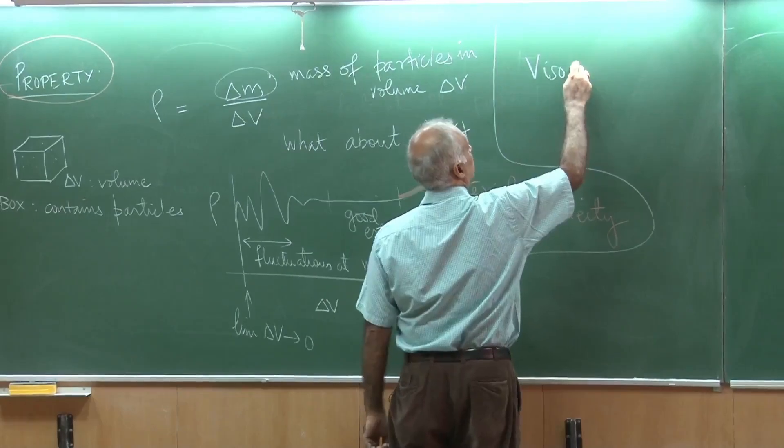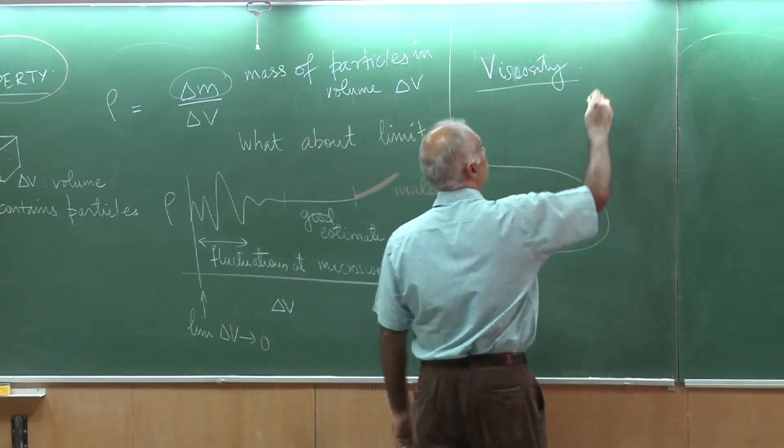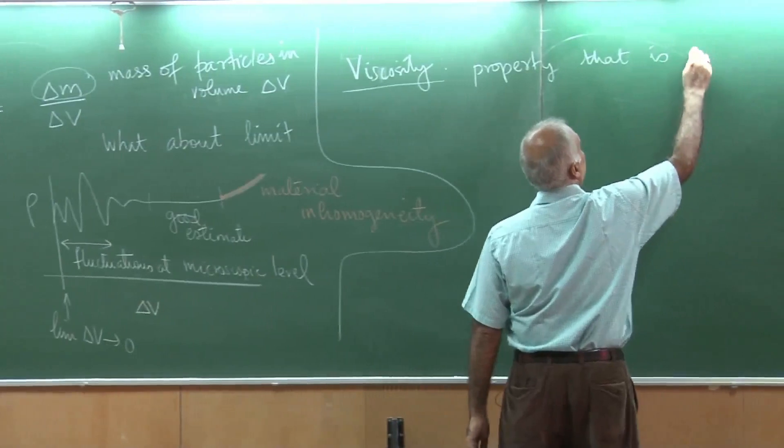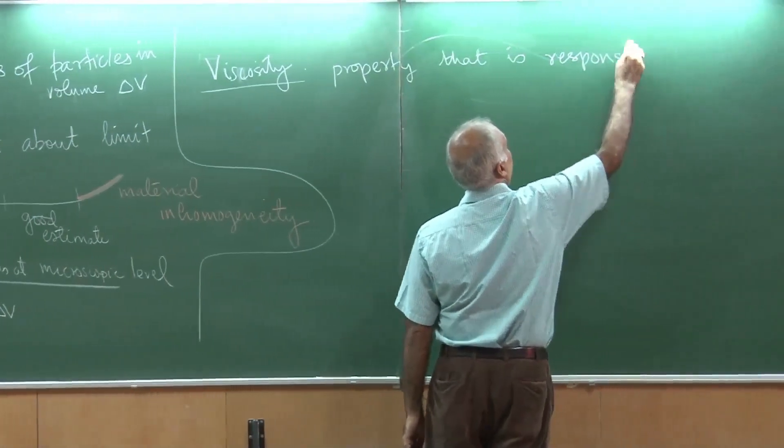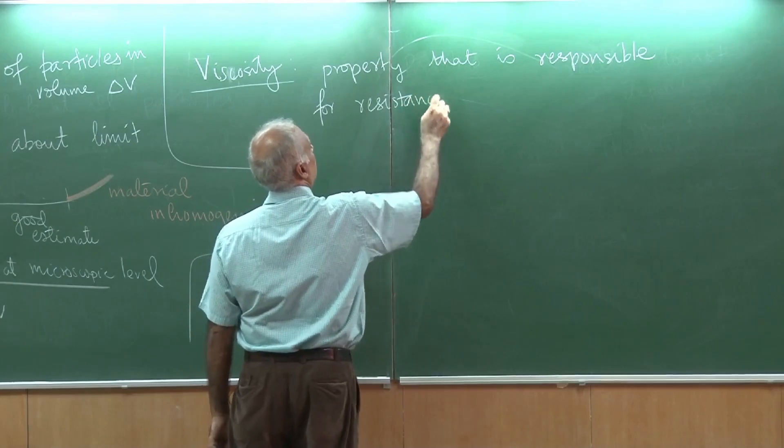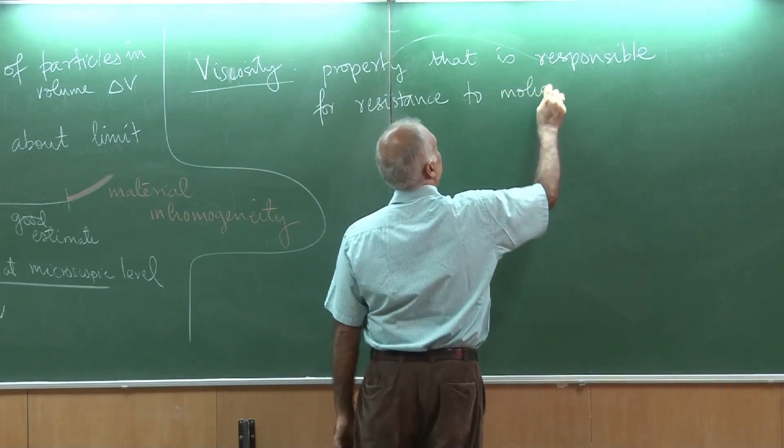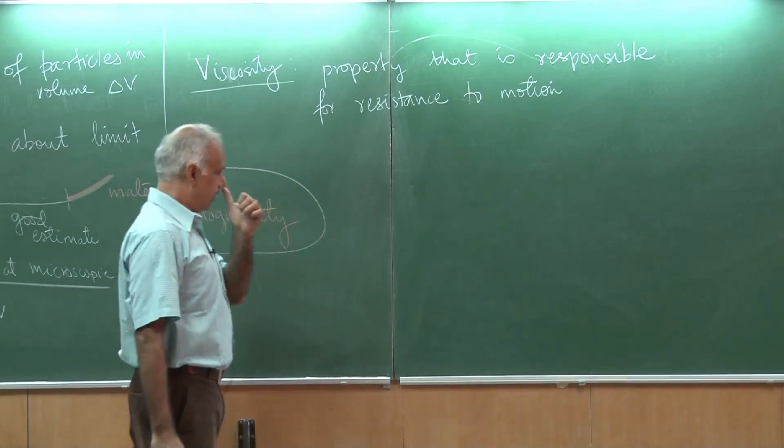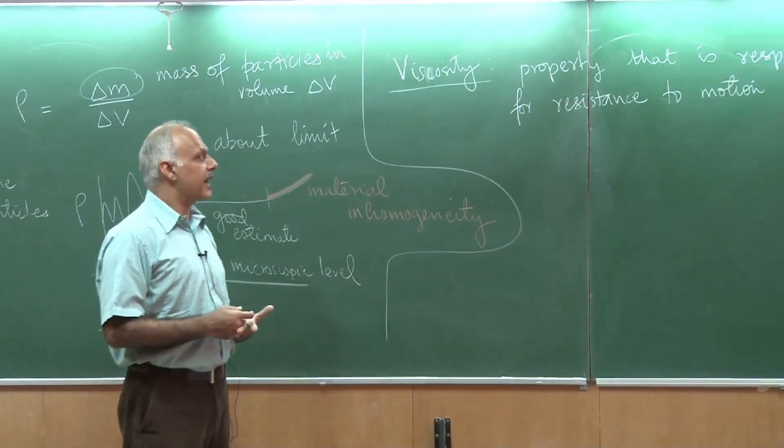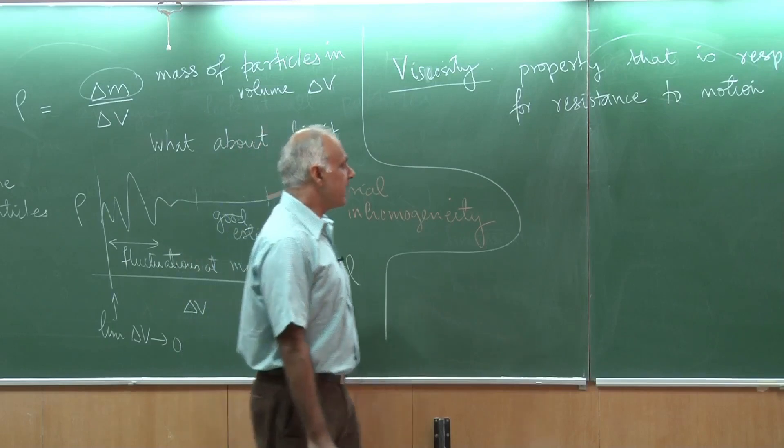The first property I want to talk about is viscosity. This is the property that is responsible for resistance to motion. If I try to drag, let's say, a pole through water, then I am going to incur some drag and a big reason for that is because the flow is viscous. Let me give you an example.